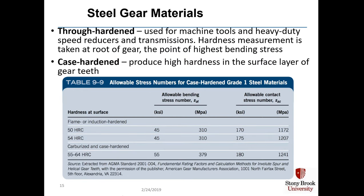To run gears for millions of revolutions, a hardening operation is required for the surface of the gear. Through hardening is used for machine tools, heavy-duty speed reducers, and transmissions. Case hardening produces high hardness only in the surface layer of the gear teeth, which is usually sufficient to make the gear last a few million revolutions. In general, a bigger hardness number means a longer-lasting gear.